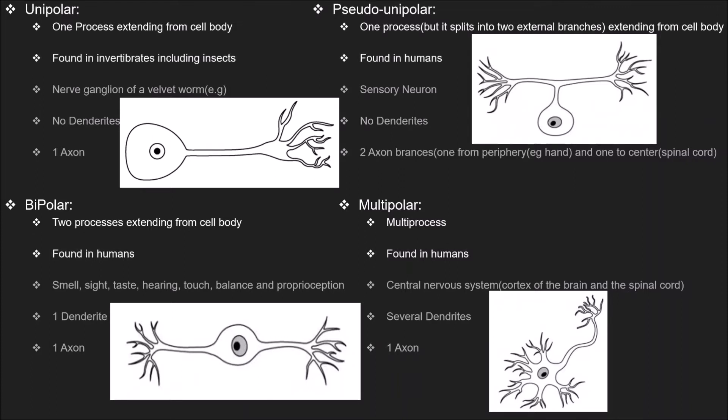Unipolar neurons are usually found in invertebrates, including insects. Invertebrates basically means organisms that do not have a spine — those are called invertebrates. Unipolar neurons are found in the nerve ganglion of a velvet worm, for example.